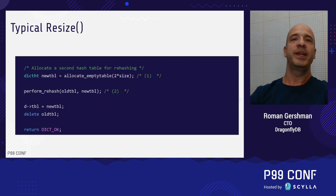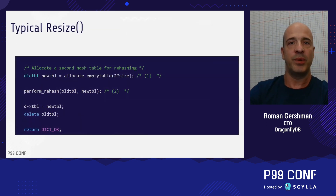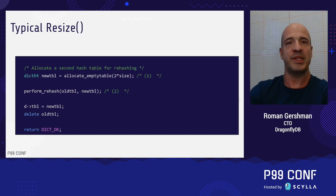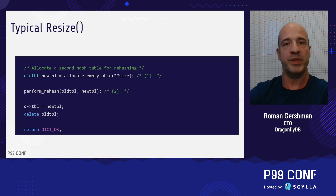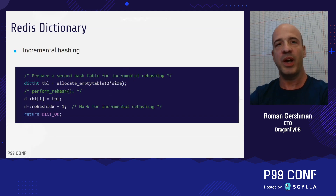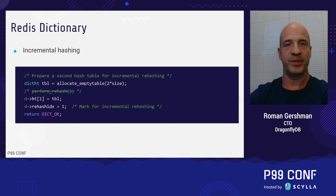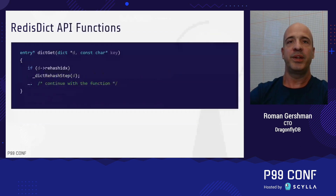As you probably remember, in a classic hash table, the insertion time is amortized constant. It's amortized partly because once in a while, the hash table must perform a heavy operation like resize as part of its insertion flow, and this operation takes a long time. If you look at the typical resize operation on the slide, it has two parts: the allocation part and the rehash part that moves all the existing items to their new positions. Redis dictionary, however, only performs the allocation part when doing resize and doesn't perform rehashing immediately. Instead, it switches to the incremental rehashing state.